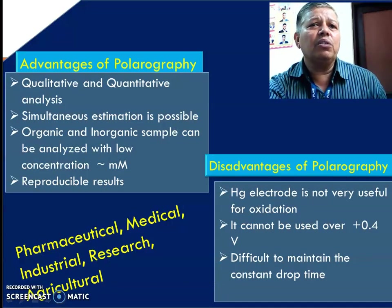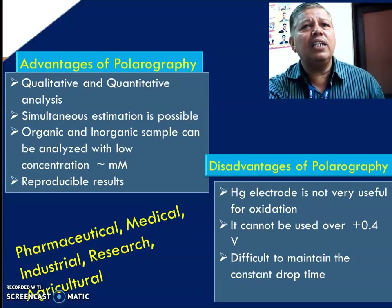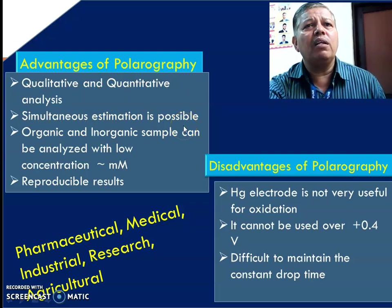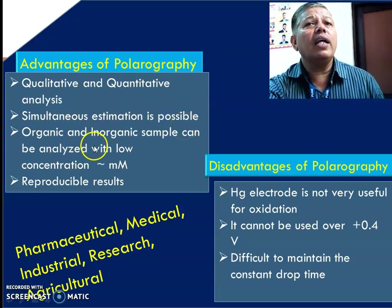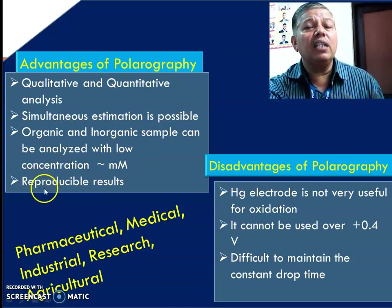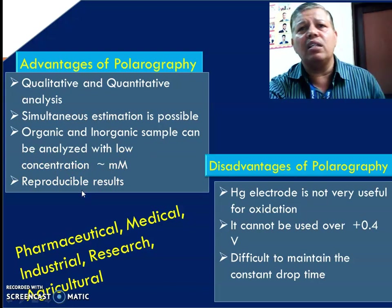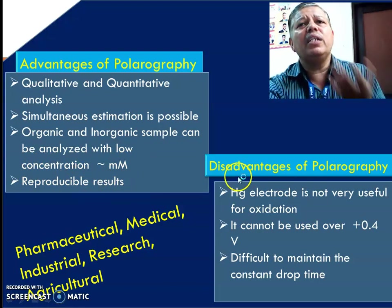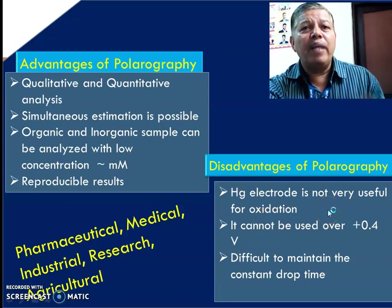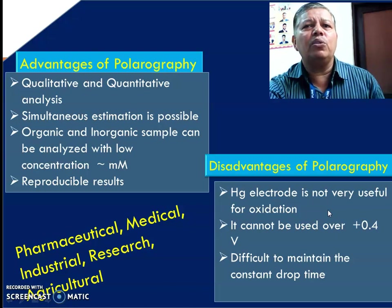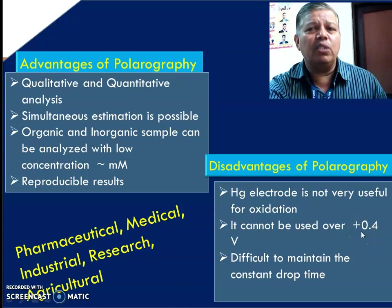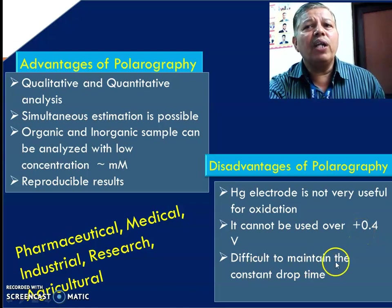Polarography has many applications, advantages, and disadvantages. Qualitative and quantitative analysis can be performed simultaneously with this technique. Both organic and inorganic samples can be analyzed; we simply require the ion in ionic form and the results are reproducible — these are advantages over other techniques. However, the mercury electrode is not very useful for oxidation because maintaining mercury drop time and drop size is very difficult, and it can only be used up to +0.4 volt, which is difficult to maintain.